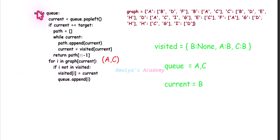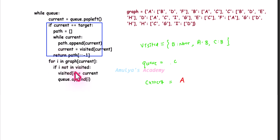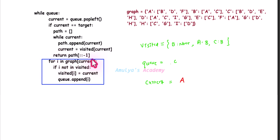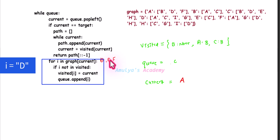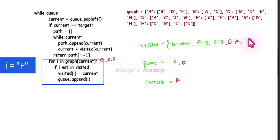We have no more adjacent nodes for B, so we come out of the for loop. While loop: queue is not empty so current becomes A via queue dot pop left. A is not the target, so for I in graph of A — that is B, D, F. B is already visited, so skip it. D is not visited, so add D to visited with parent A and append to queue. F is not visited, so add F to visited with parent A and append to queue.